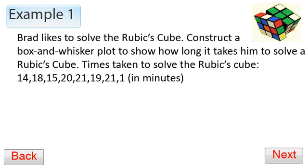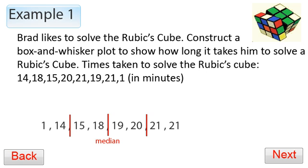To make a judgment about how good he is, we'll start by putting these numbers in order: 1, 14, 15, 18, 19, 20, 21, 21. Once in order, we're going to split them into quarters. We'll put a line here, here, and here. The line in the middle is our median - the middle number - and that median is 18.5.